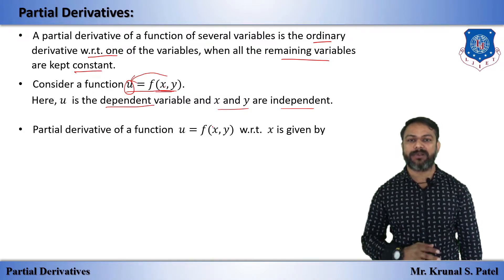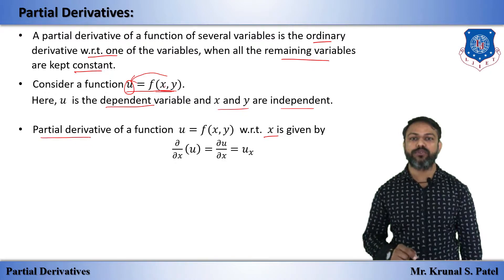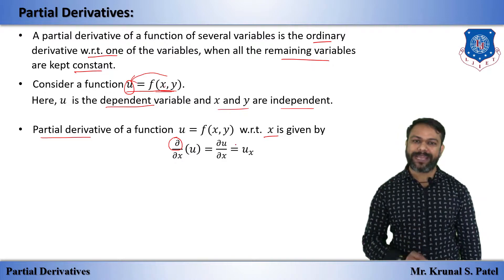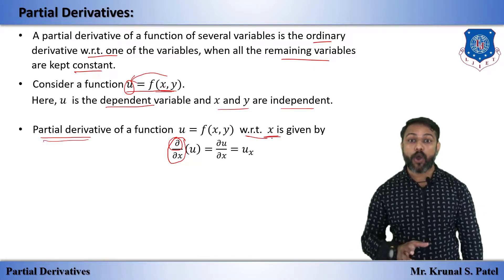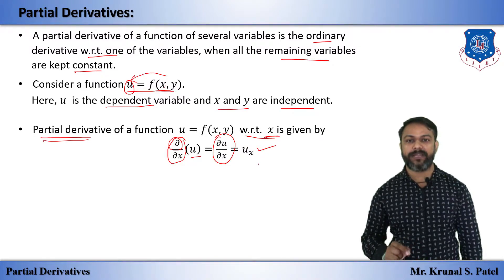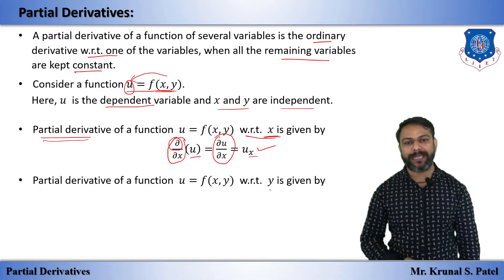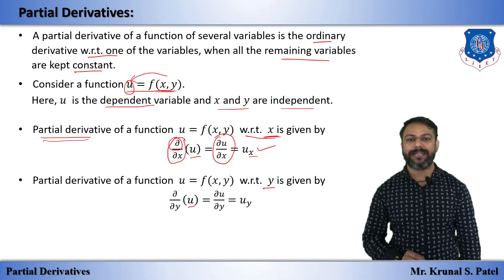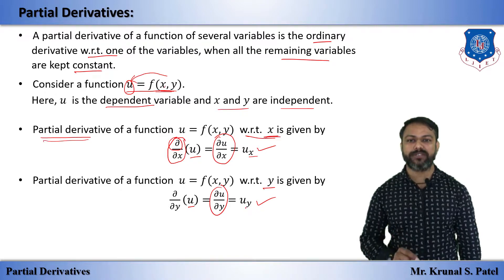The partial derivative of u = f(x, y) with respect to x is written as del u / del x. Whenever you differentiate partially, you use the symbol del. So del by del x of u means del u / del x, and in notation this is written as u_x. Similarly, the partial derivative with respect to y is del u / del y, written in notation as u_y.